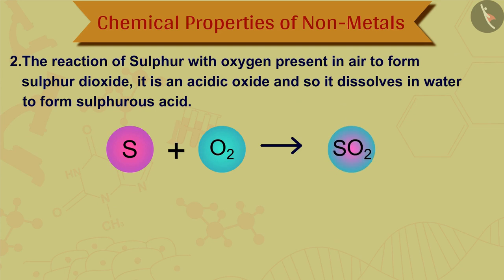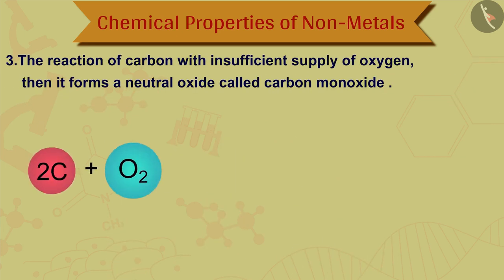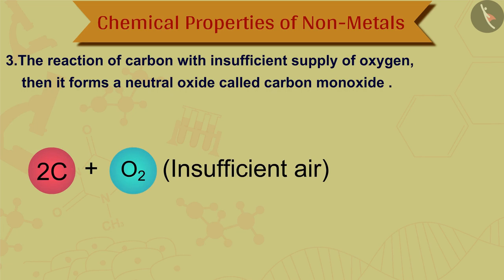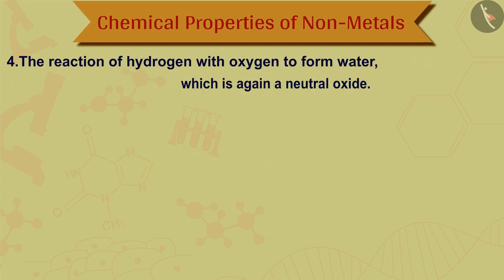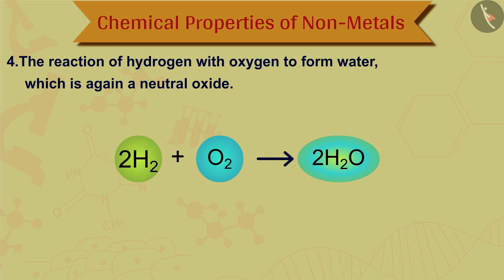Second, the reaction of sulfur with oxygen present in air forms sulfur dioxide — an acidic oxide that dissolves in water to form sulfuric acid. Third, carbon with an insufficient supply of oxygen forms a neutral oxide called carbon monoxide. Fourth, the reaction of hydrogen with oxygen forms water, which is a neutral oxide: H2 + O2 results in H2O.